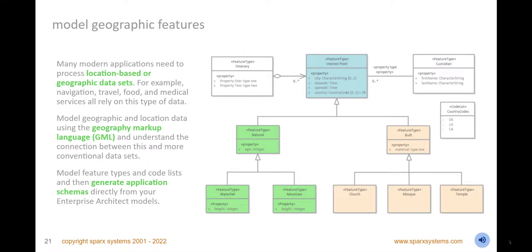Model location and geographic features using the geography markup language and visualize the features in expressive diagrams using conventional symbols. Add images to represent features such as airports, aircraft, wind turbines, buildings, and more, to make the diagrams more compelling and appealing to business and informatics stakeholders. Connect these geographic models to conventional data sets to integrate these two aspects of solution architectures. Generate industry-standard application schemas directly from the models, or create highly polished corporate documentation in various formats, including PDF and DocX.